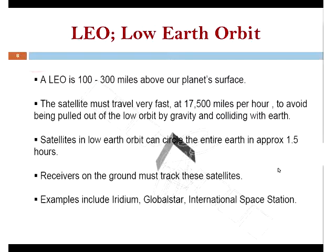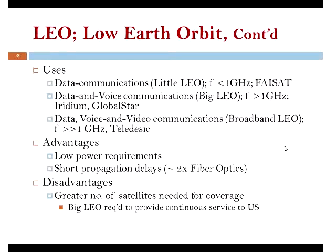The International Space Station is also in LEO, with a lot of research conducted there. It's hard to imagine that a station where humans live and do research is traveling at about 17,500 miles per hour around Earth. The International Telecommunication Union (ITU) has allocated different frequency bands to different types of services.